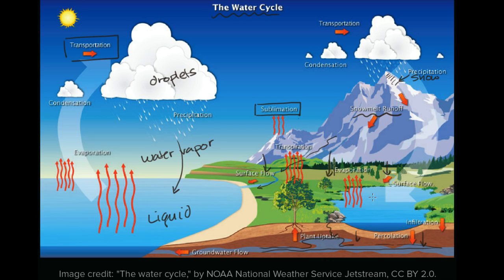We are part of the water cycle too. We drink fresh water, and our bodies are mostly water — the cells in our bodies are about 70% water. Water is a key environment for everything we study in biology. We use that water, and then we get it back out of our body, where it continues on as part of the water cycle.